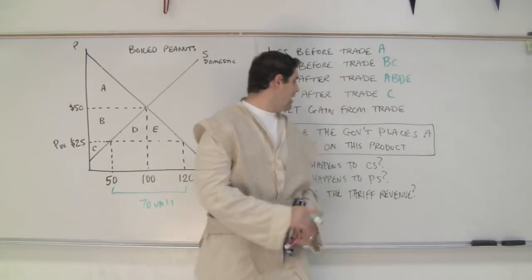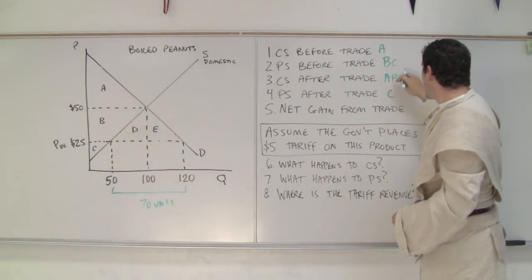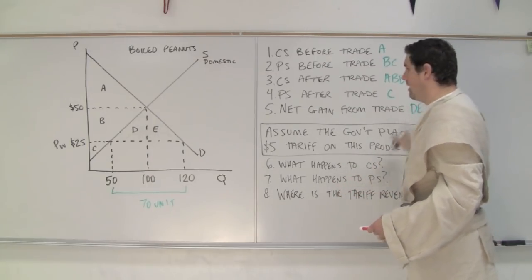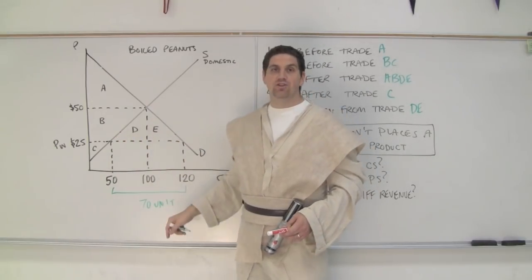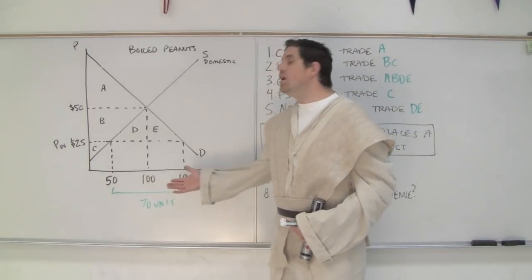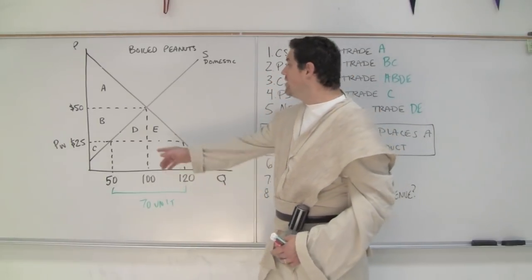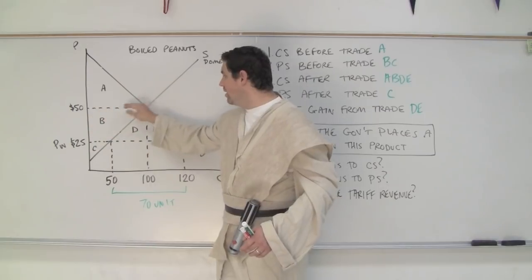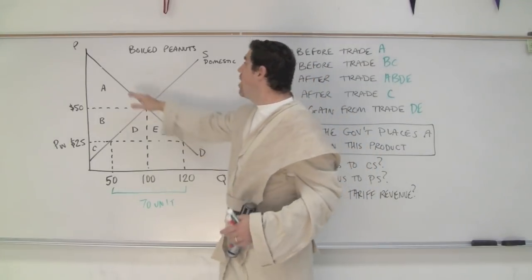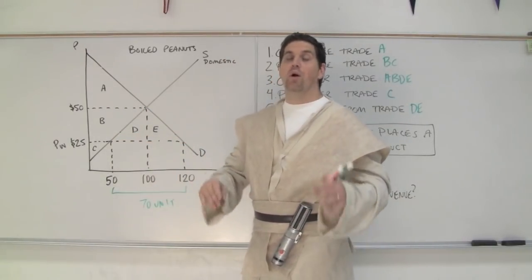Now, last question — what's the net gain from trade? Before we had A, B, and C as our total surplus. Now we have A, B, C, D, and E as our total surplus. So the answer is D and E — this triangle did not exist before international trade, and now it does. You should be able to notice who wins and loses. Clearly there's a loser — domestic producers. Their producer surplus went from a big triangle down to a really small one. But consumers gain — willing to pay, did pay $50 before, but now we pay $25. So total surplus is bigger than before because of international trade.